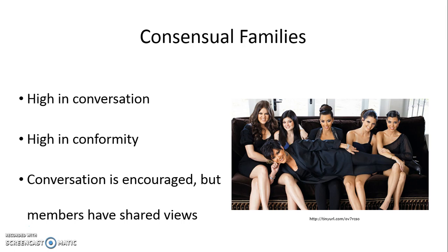As an example I picked the Kardashian-Jenner family. From the outside looking in it seems like they have a lot of rich conversations, and everyone no matter how old they are is encouraged to voice their opinion. However when you really boil it down they have very similar opinions to each other, so they have high conformity as well — which probably helps explain why, even with their crazy busy lives, they still feel very closely connected and agree with each other a lot.